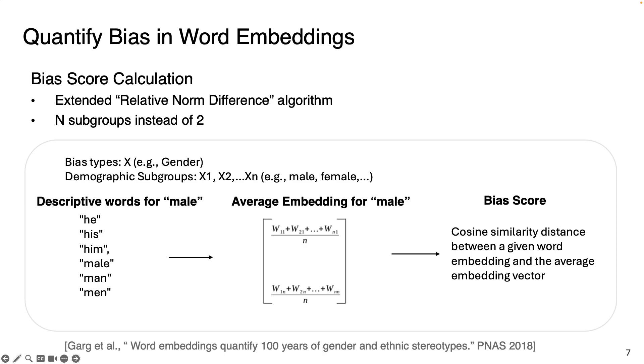Users can also add new demographic groups to inspect, add or remove any existing subgroups, and even edit the descriptive words. They can inspect new bias types such as age, religion, etc.